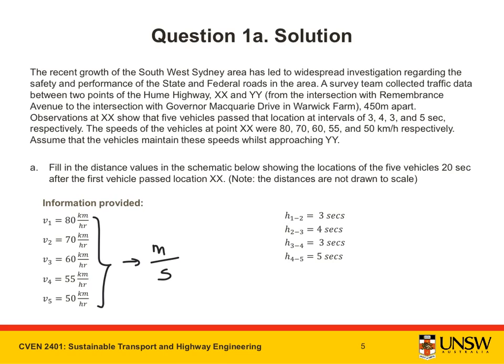The time interval between each vehicle passing XX is given as well. This is called the headway. For example, after vehicle 1 arrives at XX, 3 seconds elapses before the following vehicle, vehicle 2, arrives at the same point.